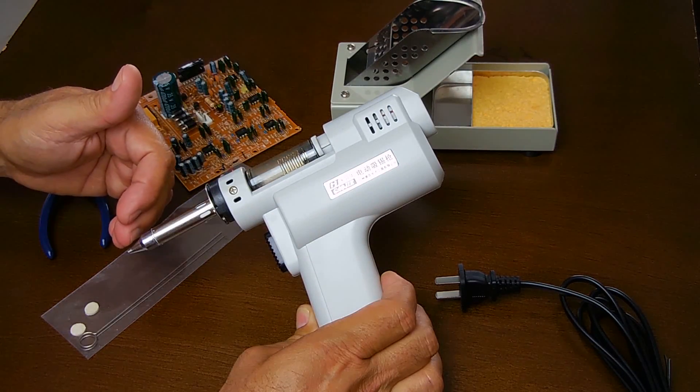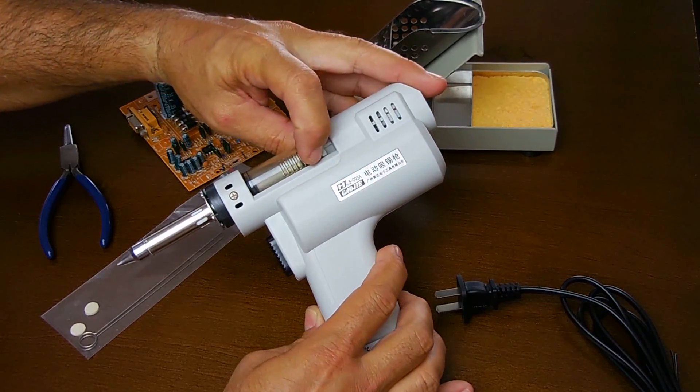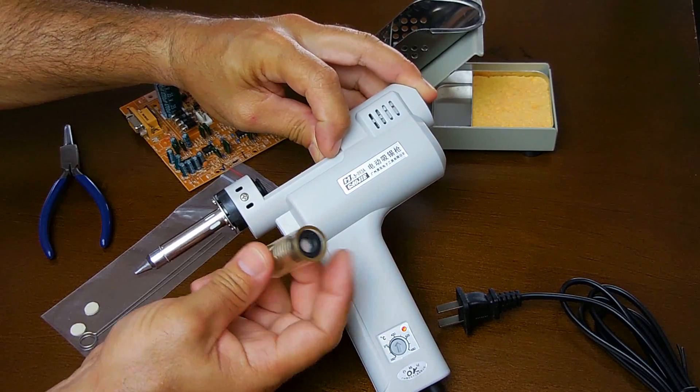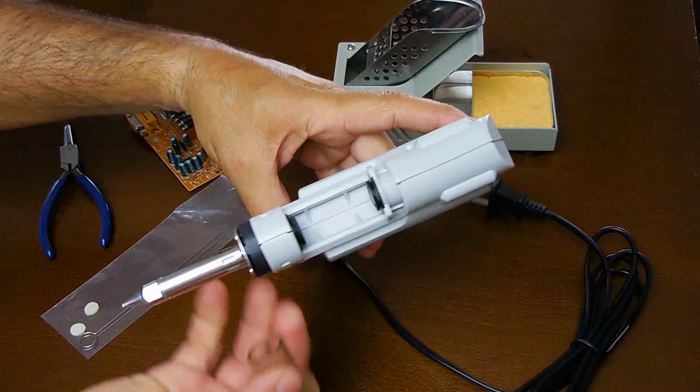It draws the solder through the entire tip and into the chamber. Once it's full you can push this backward, pull it out like this, bang it out and clean it.